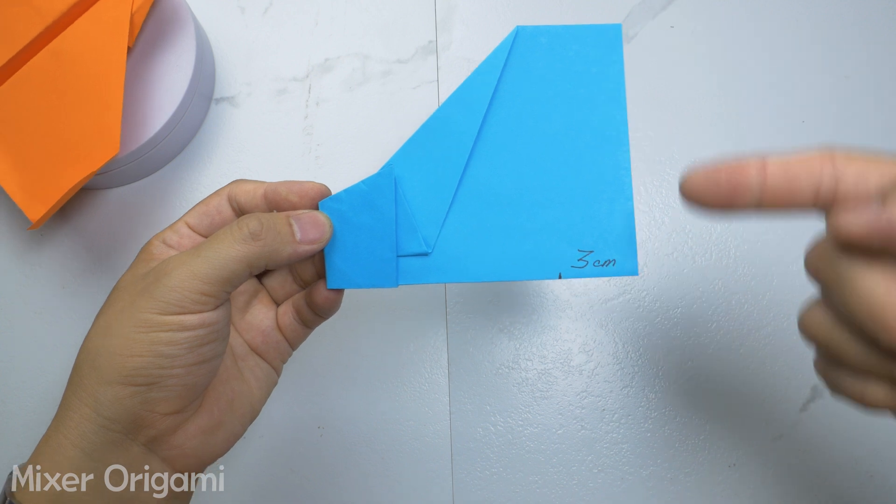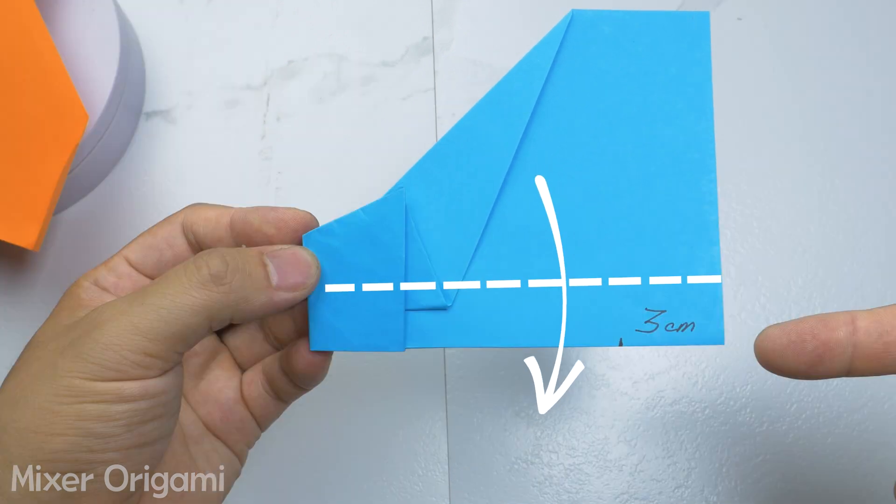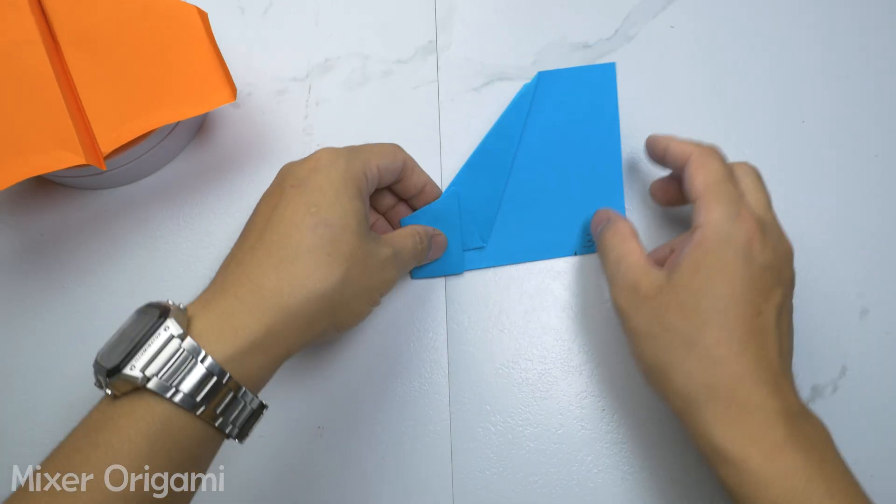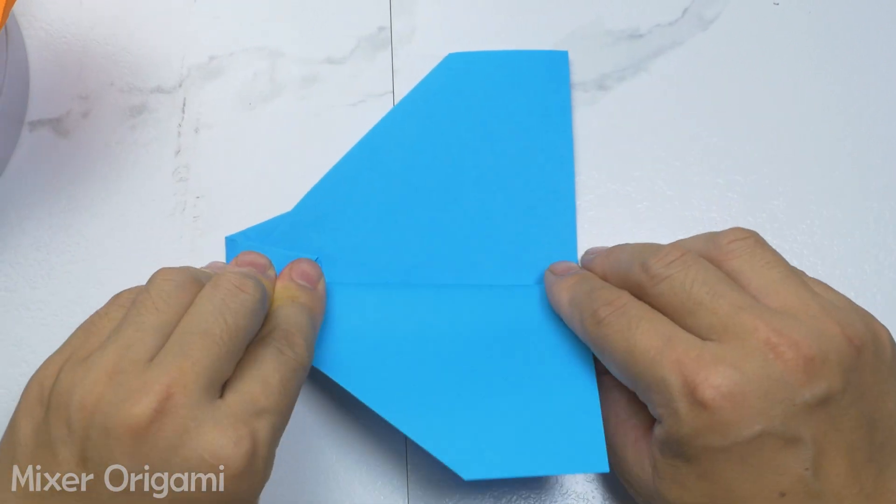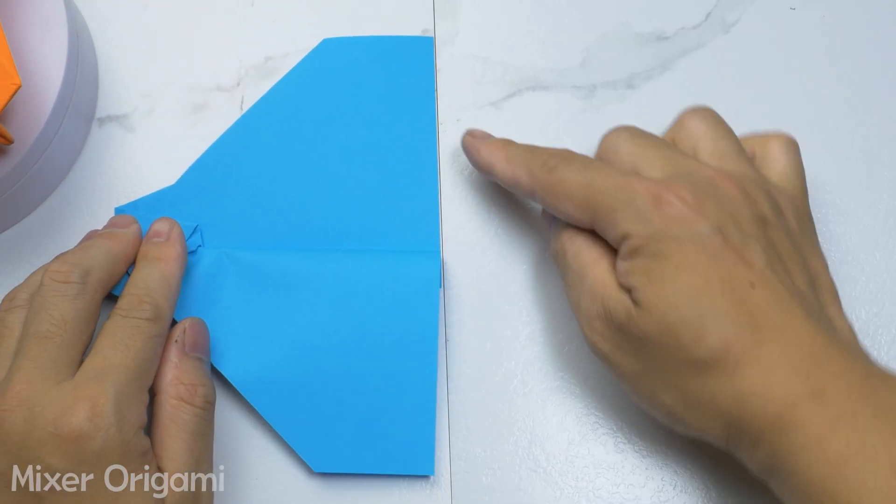Step 12. Fold the two wings of the airplane down so that both sides of the wings are on a straight line. You can use a ruler or a straight edge as a guide. Make sure you fold both sides of the paper airplane wings together for the best results.